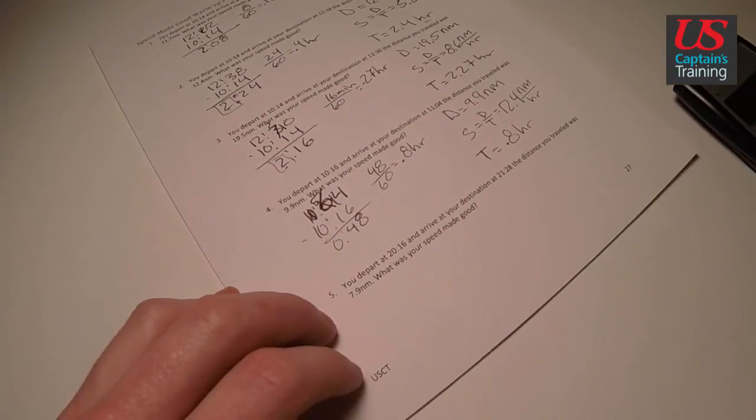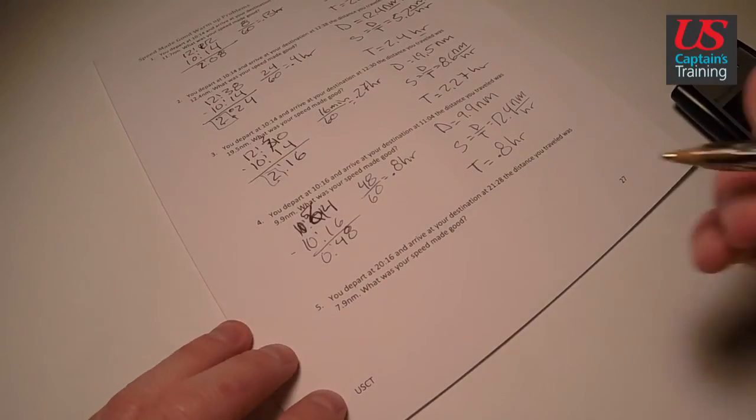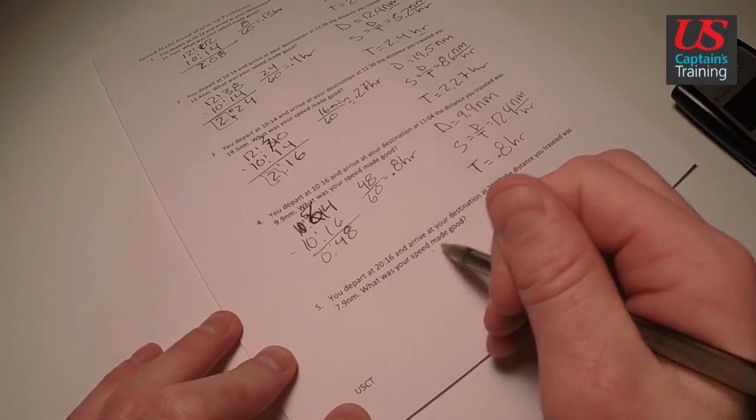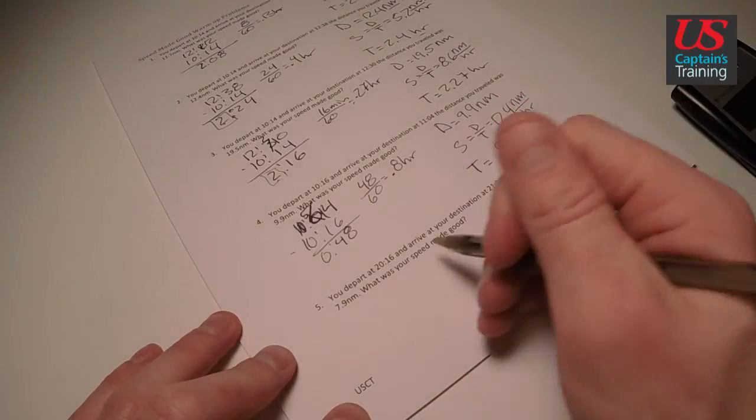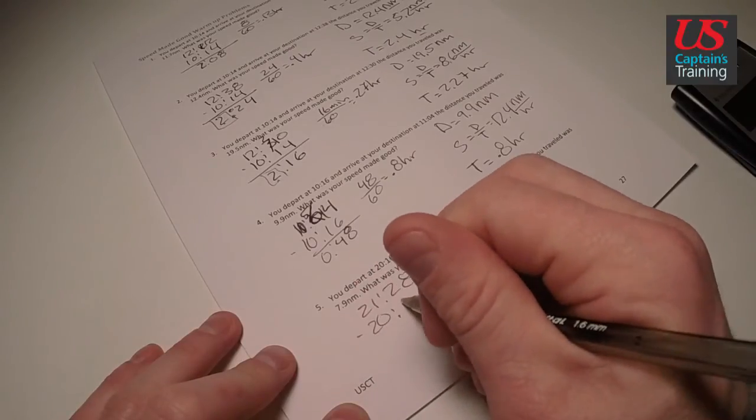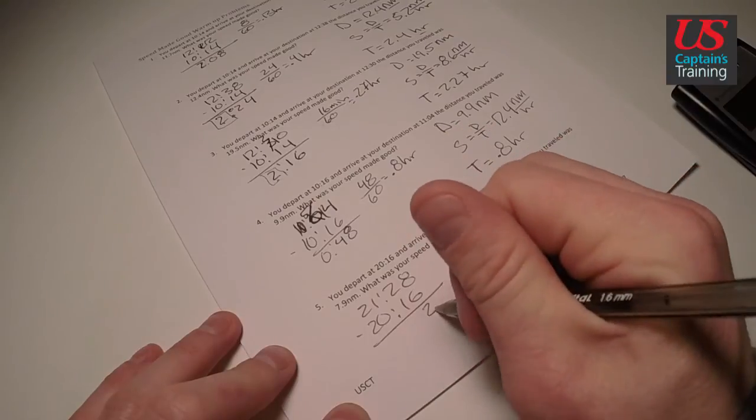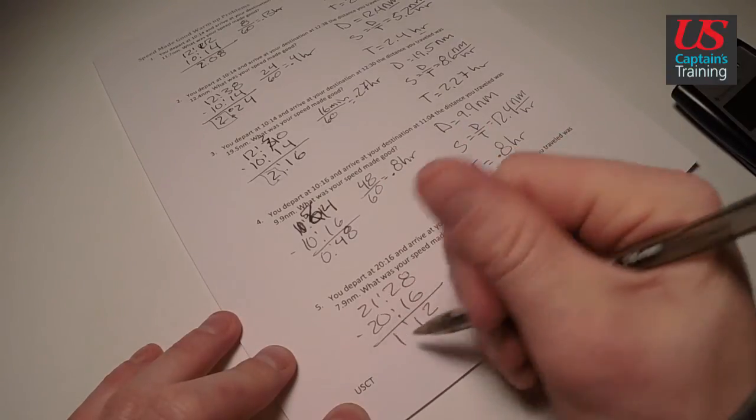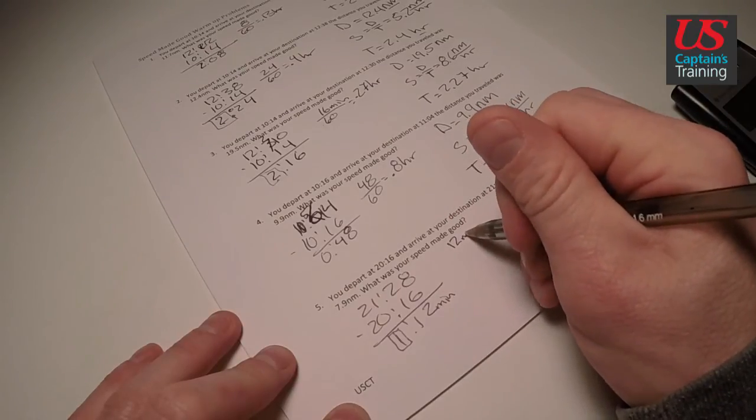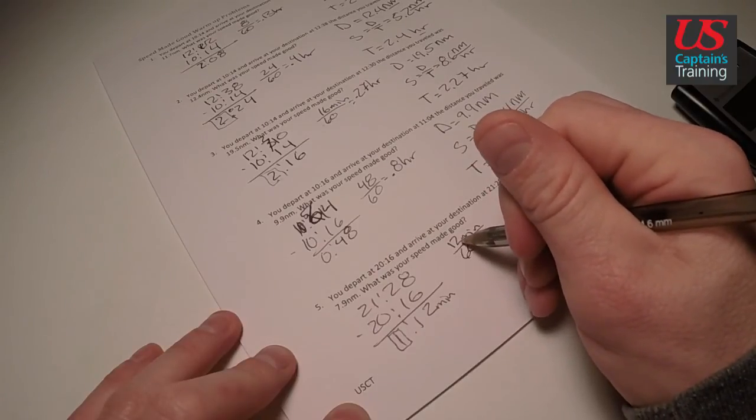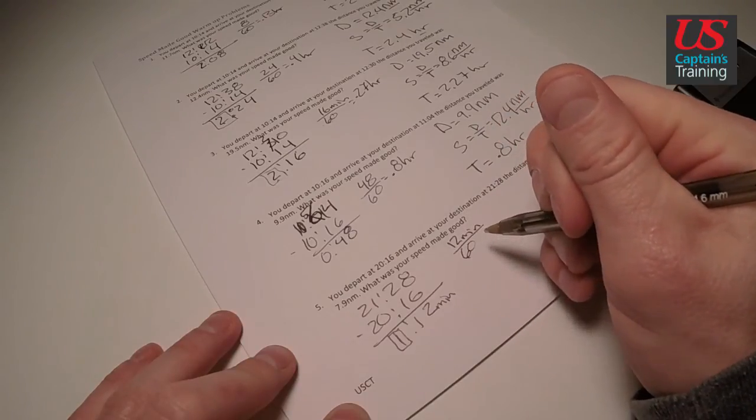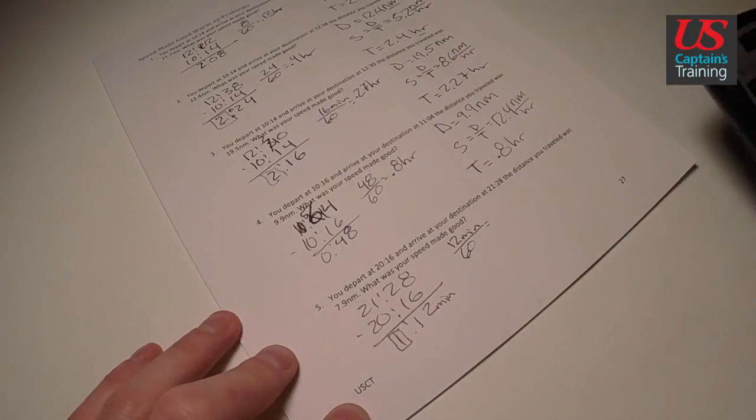Alright, last one. Here is the last one. 5 says we depart at 2016. We arrive at our destination at 21.28. The distance was 7.9. What was your speed? So the end time minus the start time, 21.28 minus 2016 equals, so 8 minus 6 is 2, 2 minus 1 is 1, 21 minus 20 is 1 hour and 12 minutes. And this one is good because it's an hour. These are minutes, so 12 minutes divided by 60. And again this is almost 15 minutes which we know is 0.25 hours, so our answer for 12 minutes converting it to hours is going to be close to 0.25. We always want to be checking these things mentally so we know we're not just out of the ballpark. 12 divided by 60 equals 0.2, 0.2 hours.